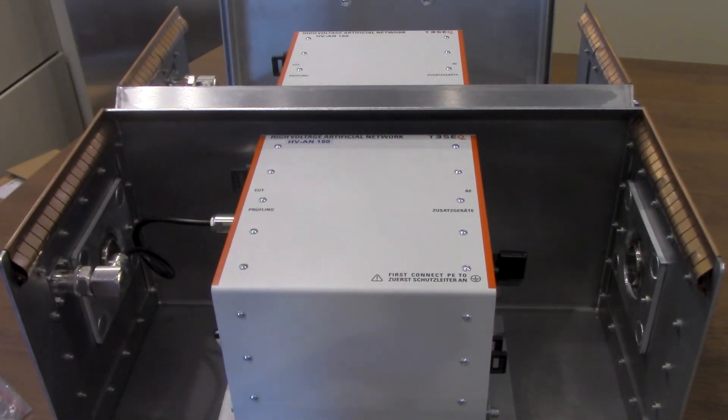This is your monitoring port going to the outside of the shielded metal enclosure. One of the nice things about the TESEC HVAN 150 CISPR 25 high voltage component testing is that with the jumpers you can meet a lot of different standards but also it's fairly compact, there's not a ton of room here and it's fairly easy to work with and it's not super large.